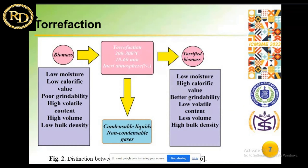The torrification process is a controlled thermal process where biomass is heated in the temperature range of 200 to 300 degrees centigrade in an oxygen-free or near oxygen-free environment. To provide this non-oxidizing atmosphere, nitrogen is the most commonly used carrier gas.